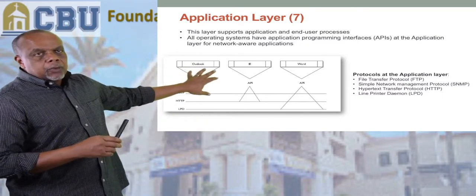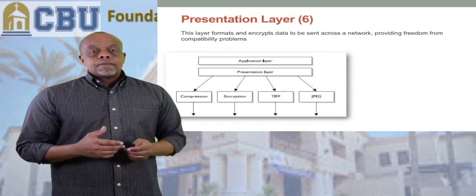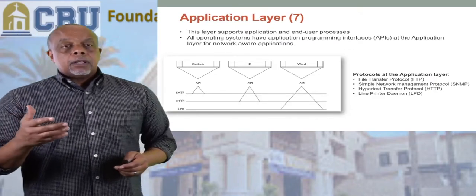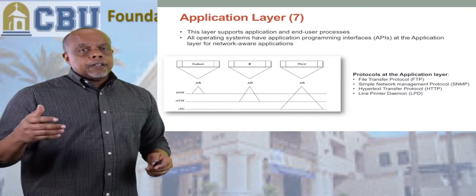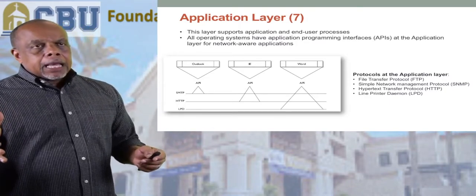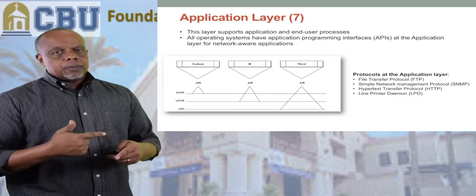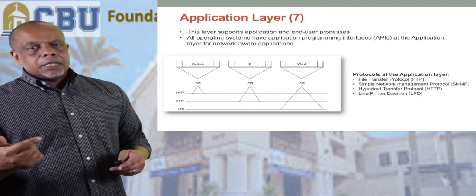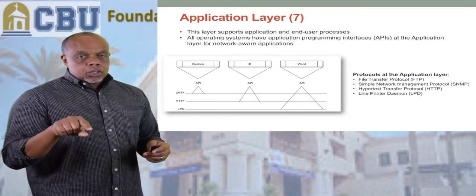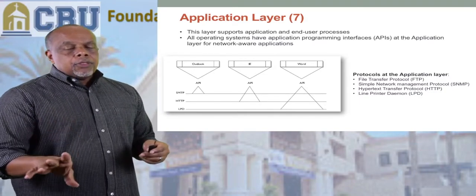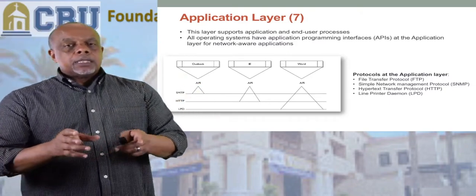The big takeaway here is don't confuse user applications with application layer protocols. For email, if you're using Microsoft Outlook, the API that sends mail isn't Outlook — it is SMTP, Simple Mail Transfer Protocol. That's what Outlook talks to. That's the protocol used to get your mail ready to be sent down the line.